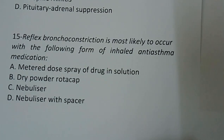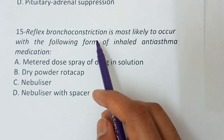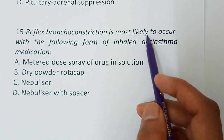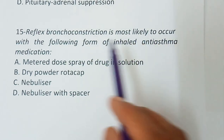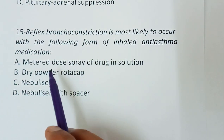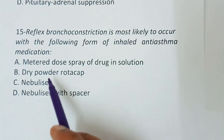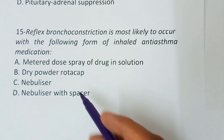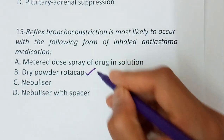Last question of this video: Reflex bronchoconstriction is most likely to occur with which form of inhaled anti-asthma medication — metered dose spray of drug in solution, dry powder rotocap, nebulizer, or nebulizer with spacer? The correct answer is option B: dry powder rotocap.